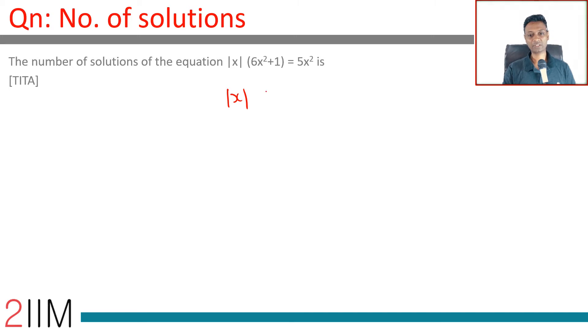I'm going to say |x|(6x² + 1) = 5x². You have |x| and x. Remember, |x| whole square is the same as x². I'm going to say |x| = y. So I call this as y: 6y² + 1 = 5y².